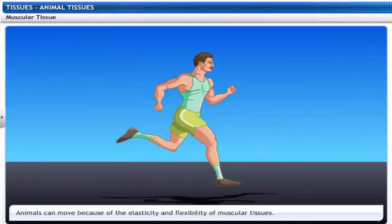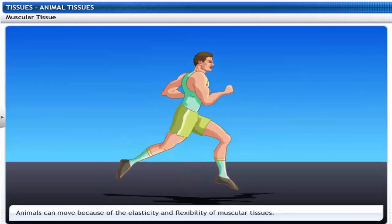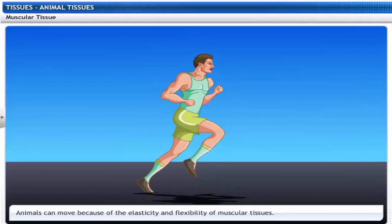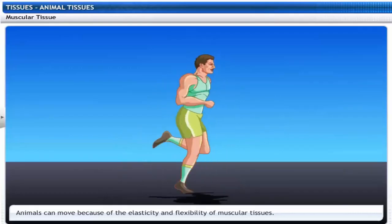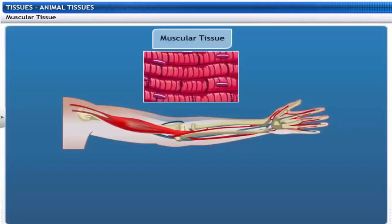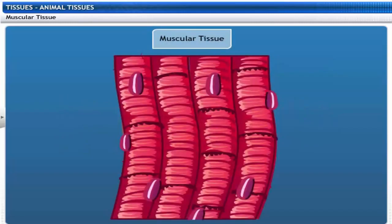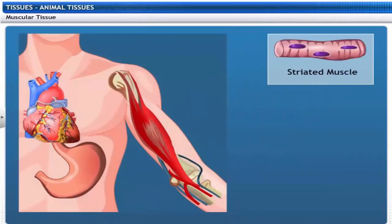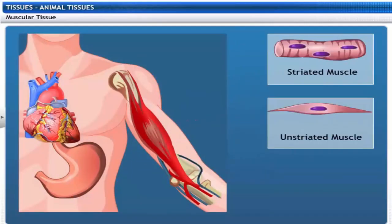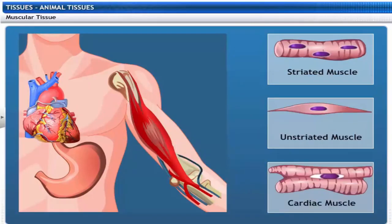Animals can move because of the elasticity and flexibility of muscular tissues. Muscular tissues have elongated cells called muscle fibers. Muscular tissues are of three kinds: striated muscles, unstriated muscles, and cardiac muscles.